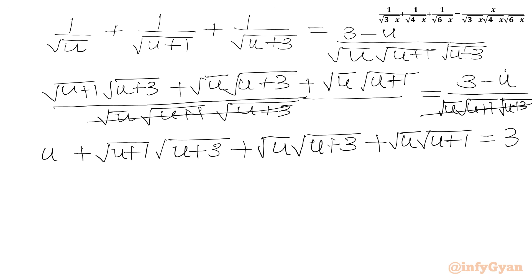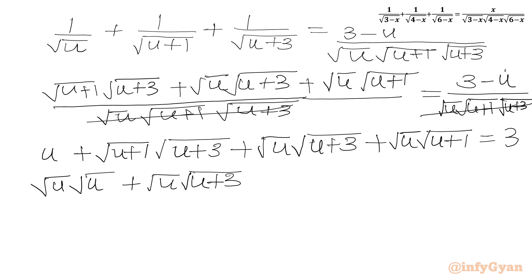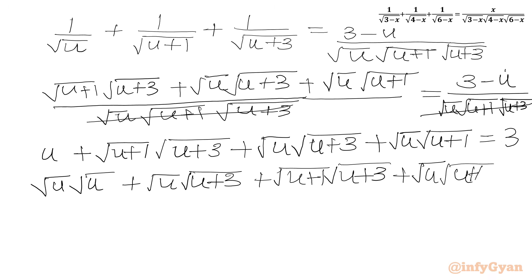Now we can write this u as square root u times square root u. Then we write the third term which has square root u, so I will write square root u times square root (u plus 3). Then we write square root (u plus 1) times square root (u plus 3) plus square root u times square root (u plus 1) plus 1 equal to 3. From these two terms we take square root (u plus 1) common, and from these two terms we take square root u common.